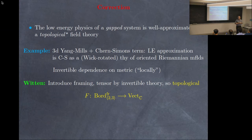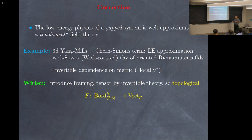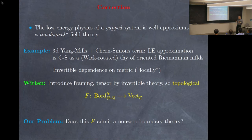The dependence on the metric is very mild. Physicists would say this by saying the energy-momentum tensor is a c-number, not an operator — a kind of invertible dependence on the metric. Witten introduced a device to get rid of that: tensor this theory by an invertible theory which also depends on the Riemannian metric, but their tensor product is purely topological. The price is that you can't do that inside oriented Riemannian manifolds — you have to introduce a framing. And so you get a topological theory of framed manifolds.